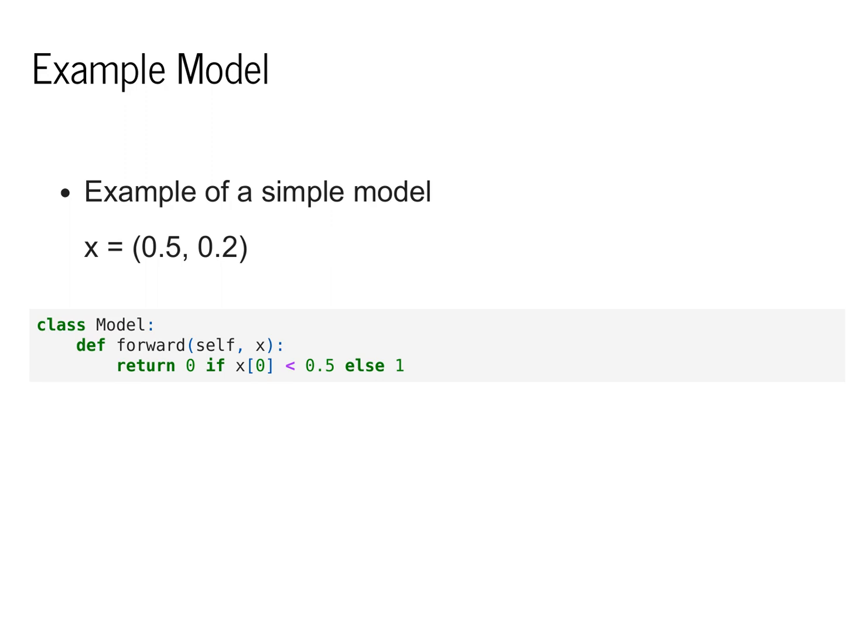The model will simply look at the first value, decide if it's less than 0.5. If so, assign it to a blue class, and if not, assign it to a red class. We'll use the convention throughout that models are represented by a class with a member function forward that determines the label.